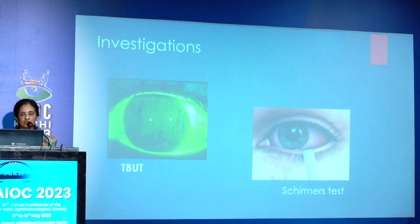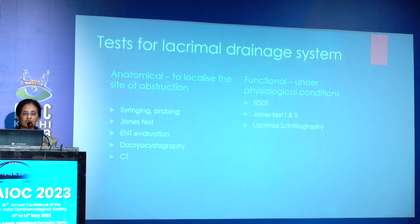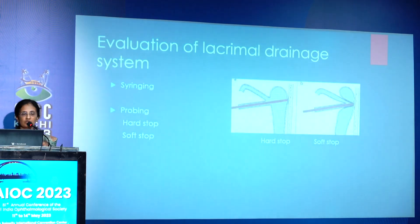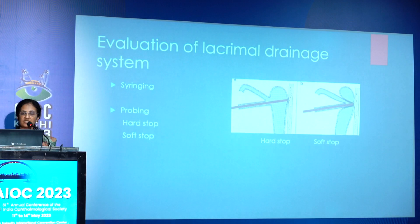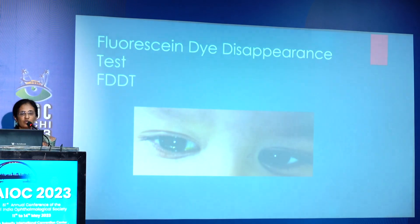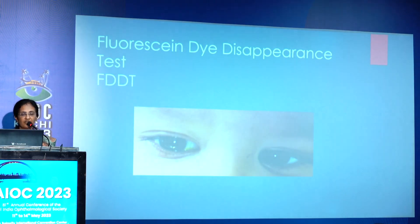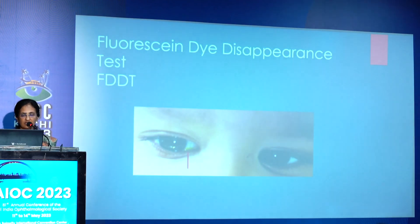Investigations: rule out glaucoma and dry eye with appropriate investigations. Tests for the lacrimal system are divided into anatomical and functional. If syringing is not patent, you can do probing: a hard stop means there is no canalicular obstruction — you are directly touching the medial wall of the sac; a soft stop means there is a canalicular obstruction. The fluorescent dye disappearance test is very useful in uncooperative children — instill fluorescent dye and examine after 5 minutes. Persistence of dye at 5 minutes indicates obstruction; rapid clearance suggests hypersecretion.